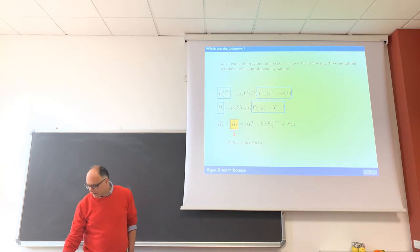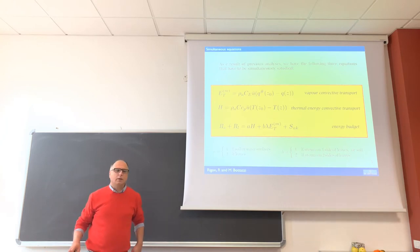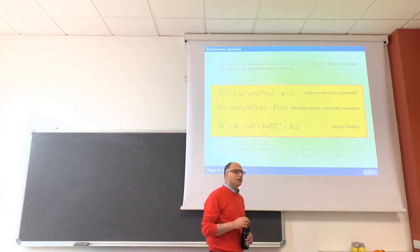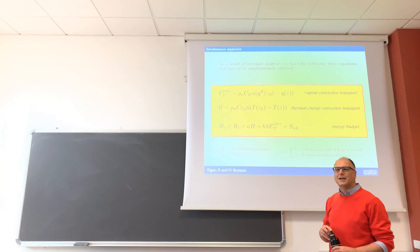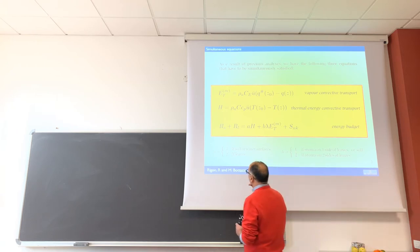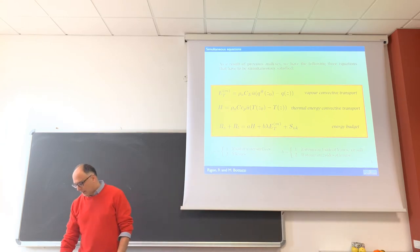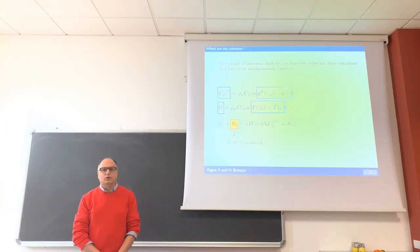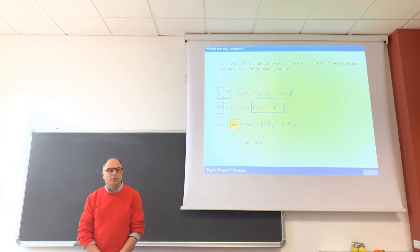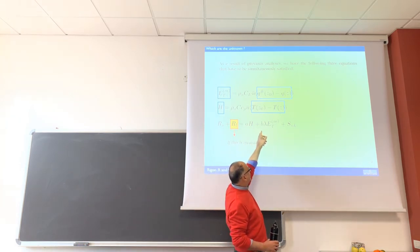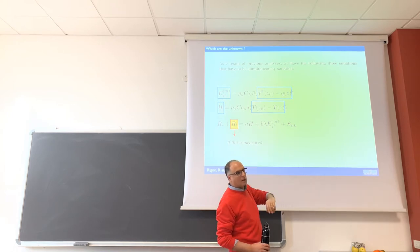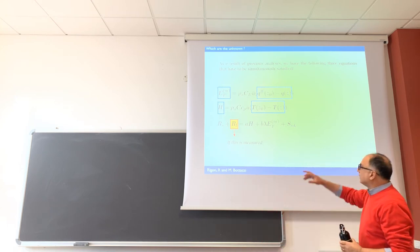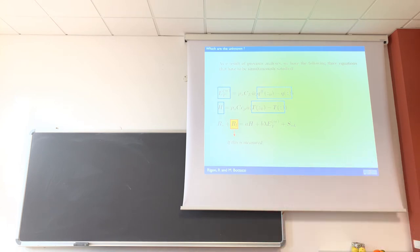It's psychologically strange because we are not used to see these equations as equations. We are looking at them as formulas that give a solution. Instead, they are three equations, and the unknowns are the evaporation, the sensible heat transport H, the difference of temperature between the surface and air, and the difference in vapor content, four unknowns.